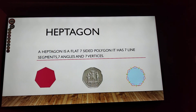Hexagon! A hexagon is a flat seven-sided polygon. It has seven line segments, seven angles, and seven vertices.